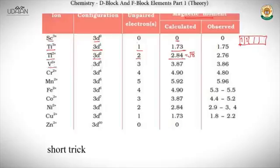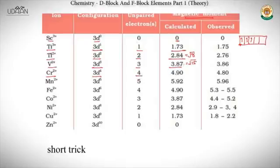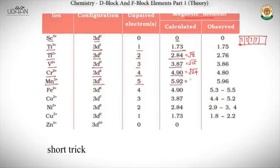For Cr²⁺ (3d⁴), there are four unpaired electrons giving magnetic moment = √(4×6) = √24 BM. For Mn²⁺ (3d⁵), there are five unpaired electrons giving magnetic moment = √(5×7) = √35 = 5.92 BM. Note that Mn²⁺ has the maximum magnetic moment because the maximum number of unpaired electrons in the d orbital can only be five.